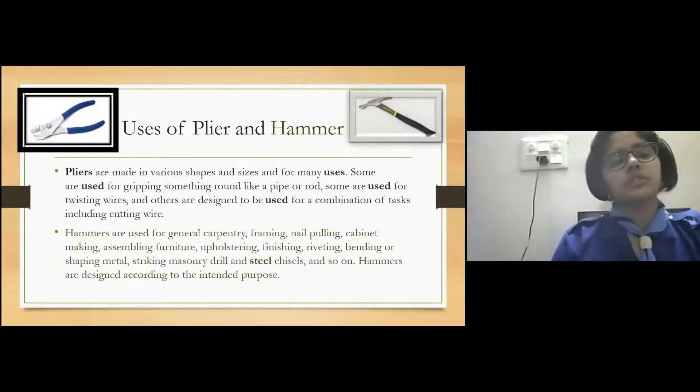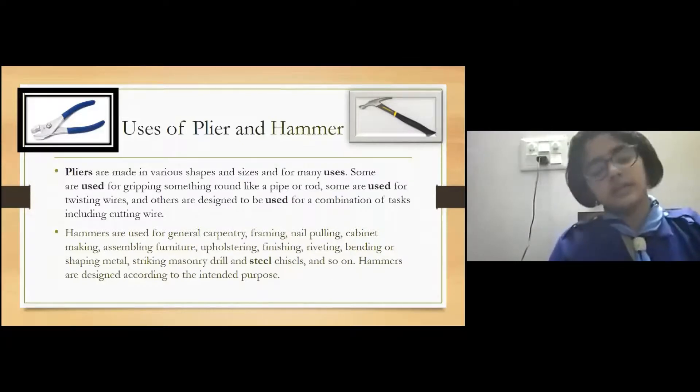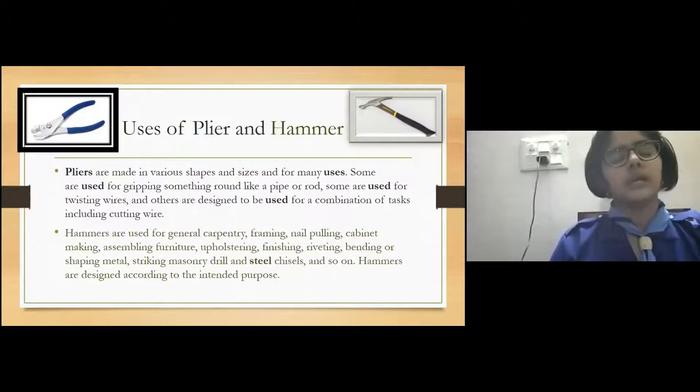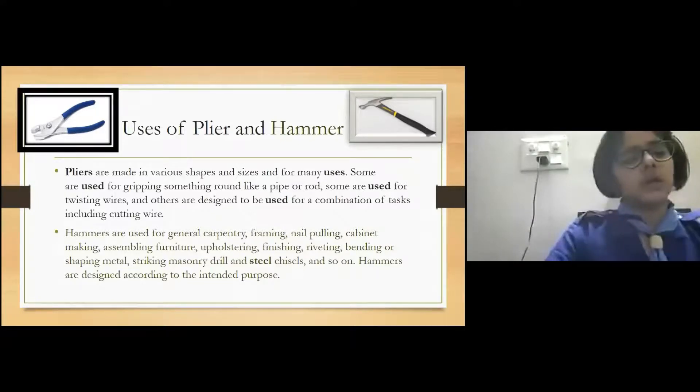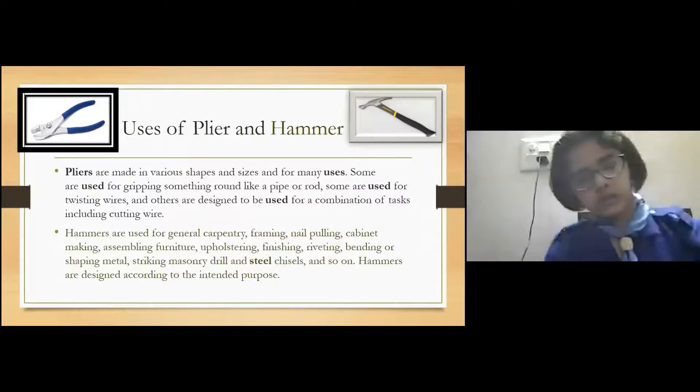Now, uses of pliers and hammer. Pliers are used in various shapes and sizes and for many uses. Some are used for gripping something round like a pipe or rod; some are used for twisting wires. Just to differentiate between if I am mentioning hammer or pliers, I have differentiated the colors—for hammer I've used a different color, and for pliers I've used black.